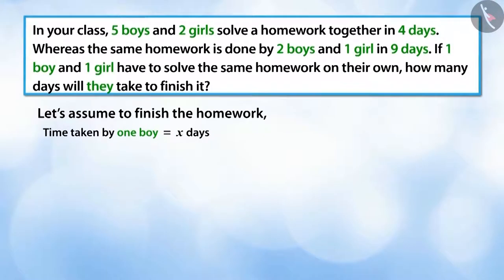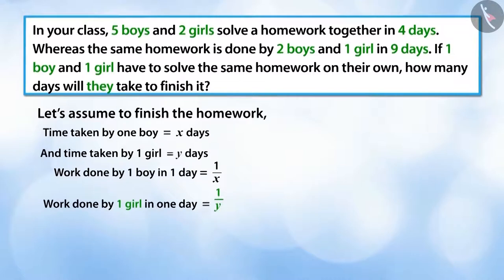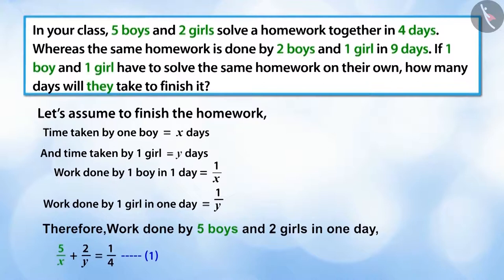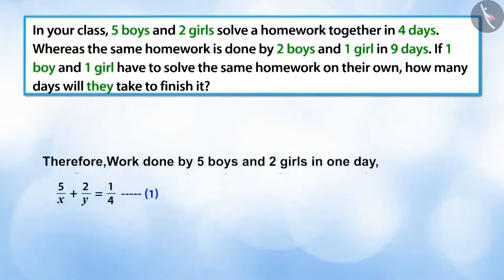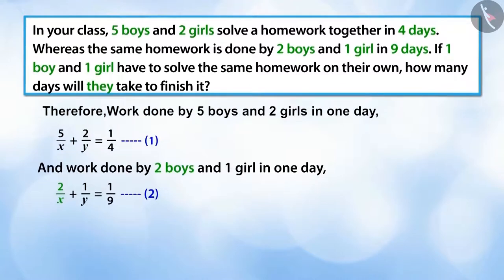Let's assume that a boy takes x days to finish this work on his own and a girl takes y days to finish the work on her own. Hence, in one day a boy finishes 1/x amount of work and a girl finishes 1/y amount of work in one day. Therefore, work done by five boys and two girls in a day, and we can similarly write the work done by two boys and one girl in a day.